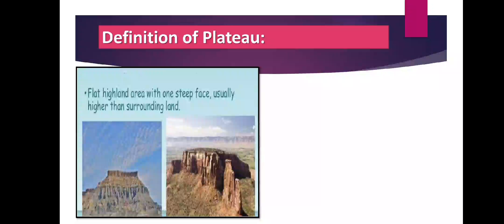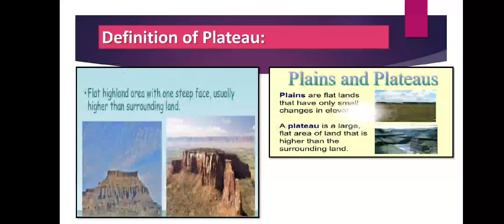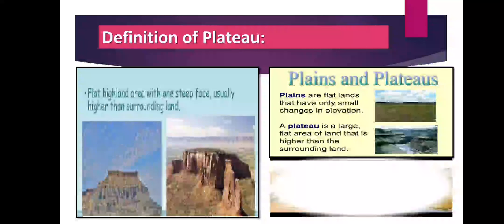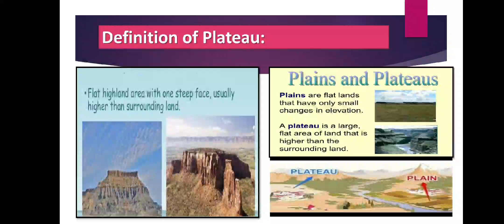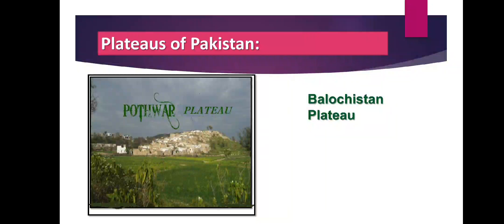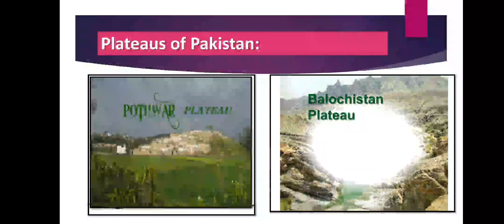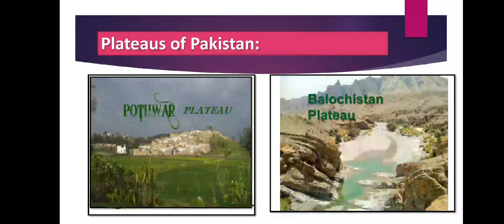Now the difference between plains and plateaus: plains are flat land that have only small changes in elevation, but a plateau is a large flat area of land that is higher than the surrounding land — this is the main difference between plains and plateaus. There are two plateaus in Pakistan: Potohar Plateau and Balochistan Plateau. Potohar Plateau is situated on the northeastern side of Pakistan, while Balochistan Plateau is located in the southwest of Pakistan.